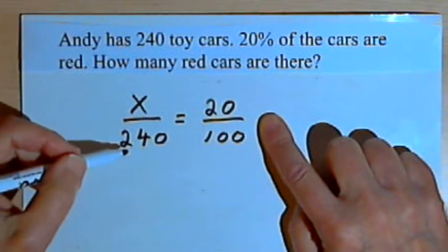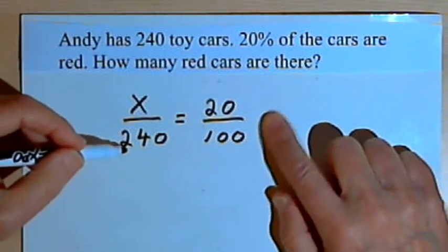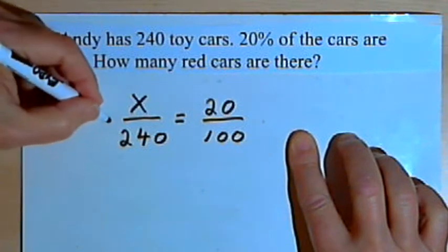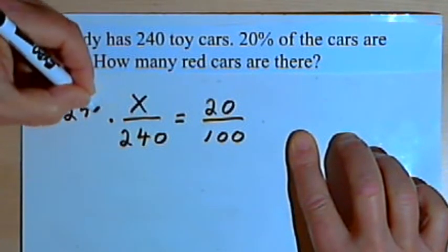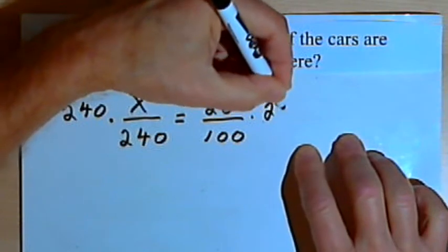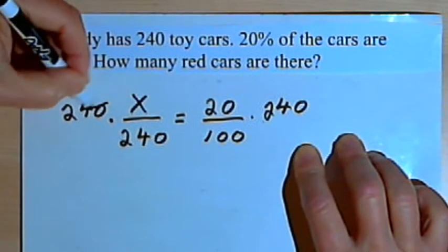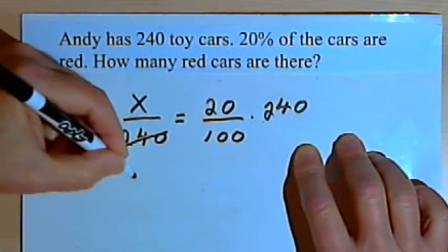The first thing I want to do to solve this is get the x by itself, which means getting rid of the 240 in this denominator. So I'll do that by multiplying both sides by 240. On the left side, 240 will cancel out, and I'll have this x.